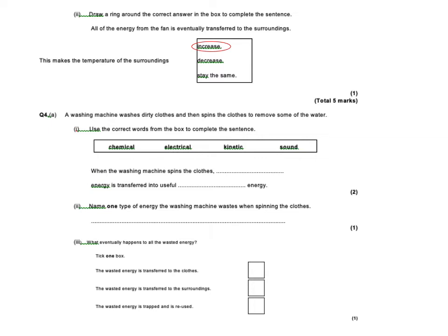On to the next one. A washing machine washes dirty clothes and then spins the clothes to remove some of the water. So again, you've got to choose the correct word for the box. So it says when the washing machine spins the clothes, chemical energy is being transferred into useful kinetic energy. So the chemical energy right back in the power station is being changed into kinetic energy. And it would be transferred electrically. Name one type of energy the washing machine wastes when spinning the clothes. It wastes thermal energy. Obviously it's getting warmer. Radiation would transfer more energy away. And again, generate more heat to the surroundings.